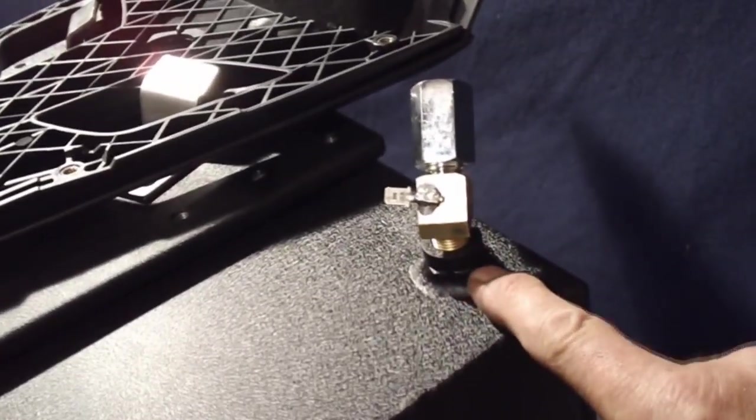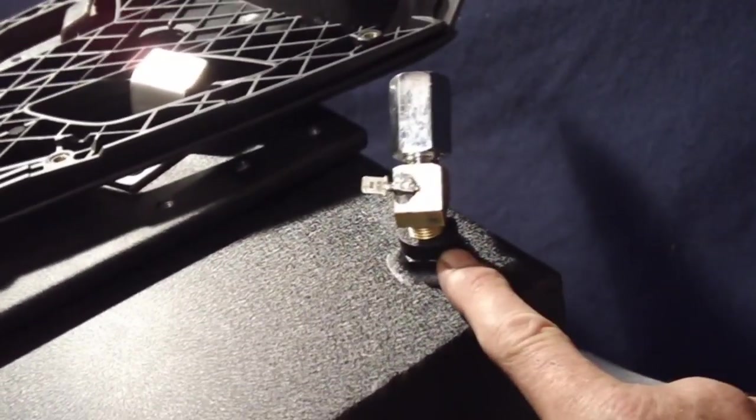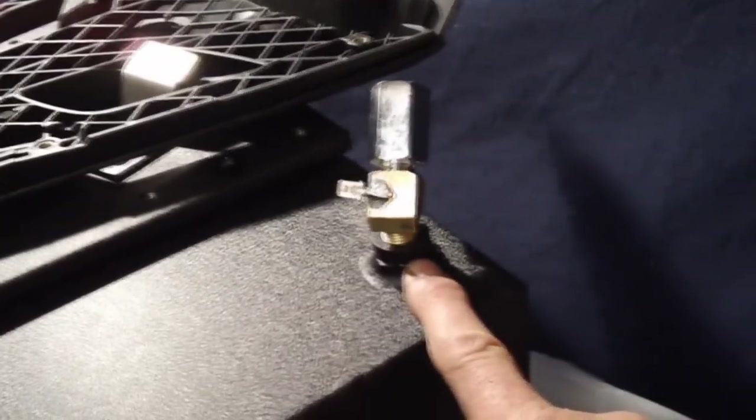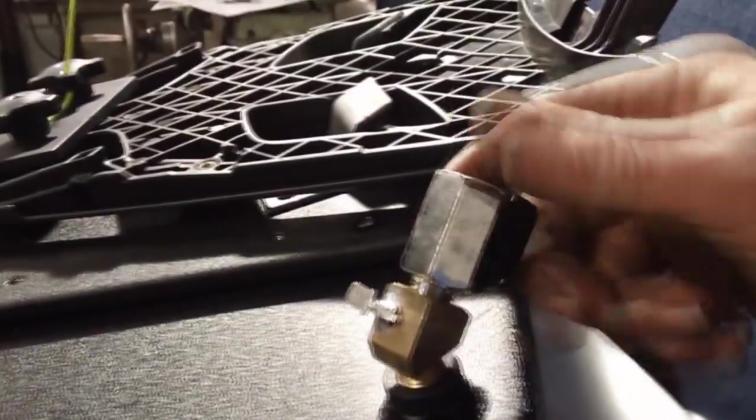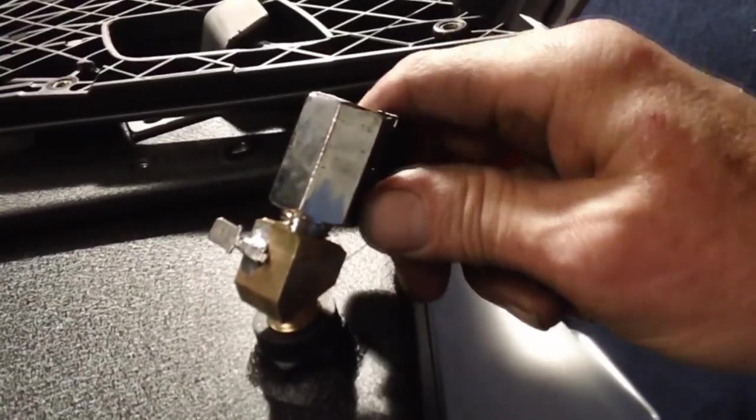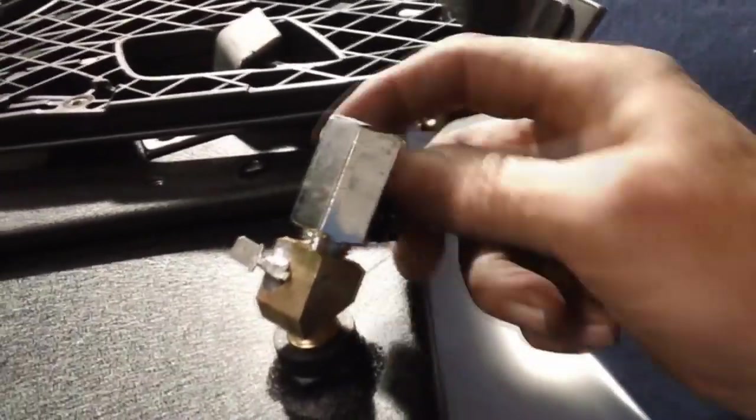The drain of the cell is a one-quarter inch national pipe thread fitting, so it uses readily available hardware. The shutoff valve is a one-quarter inch full-flow ball valve with nitrile seals.